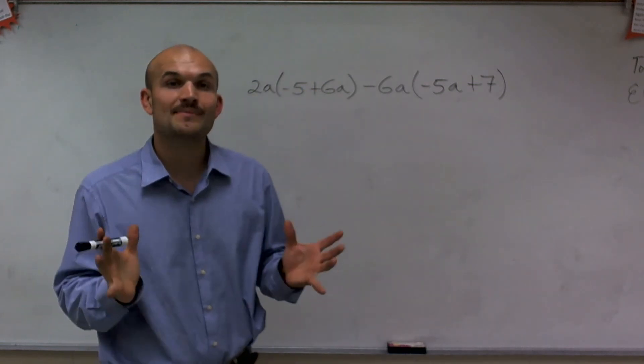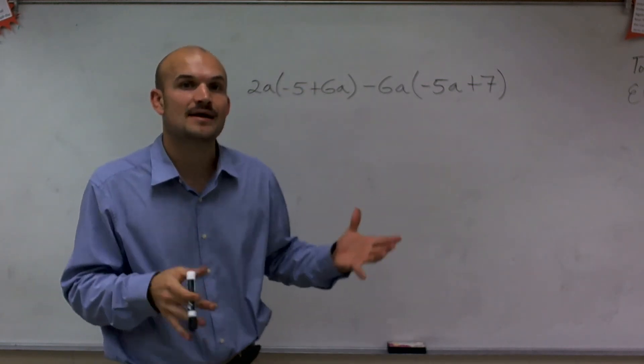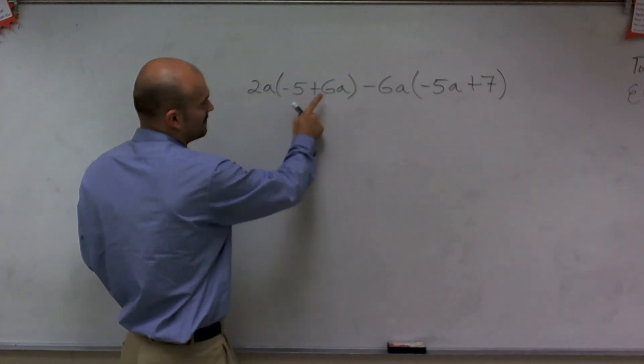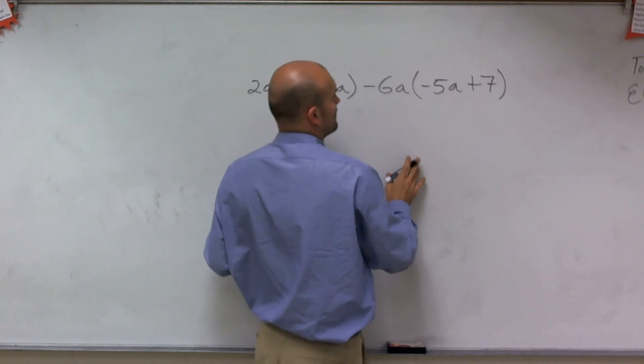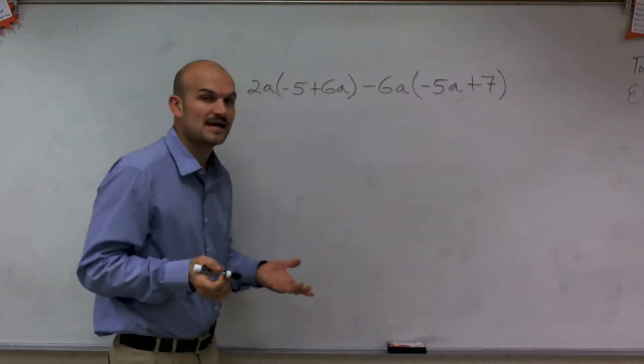Now, even before I do that, I want to make sure, can I simplify inside my parentheses? Since negative 5 and 6a are not like terms, I cannot combine them. Nor is negative 5a plus 7 like terms, so I cannot combine those as well.